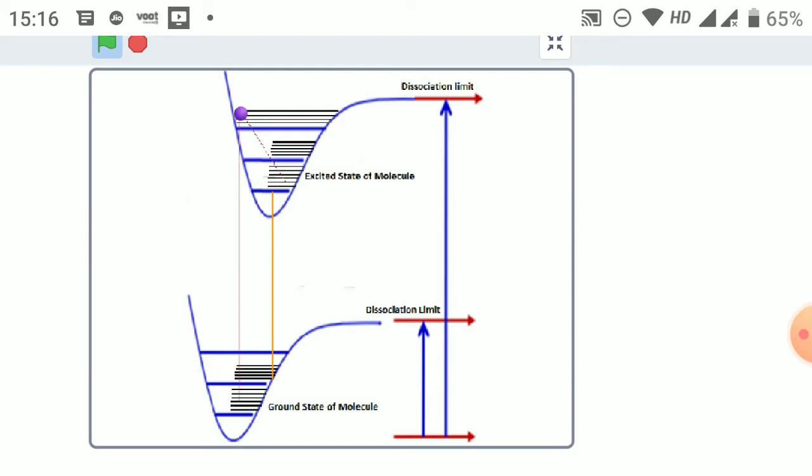The electronic transition will be without a change in the inter-nuclear distance. Thus, the electron will be excited to the higher electronic excited state with a vibrational state having the same inter-nuclear distance as that of the vibrational ground state.